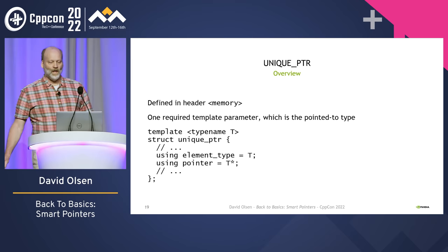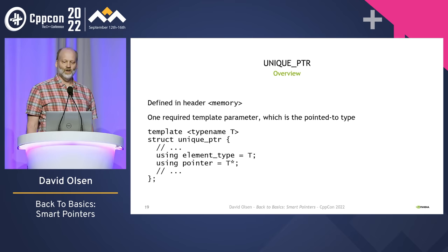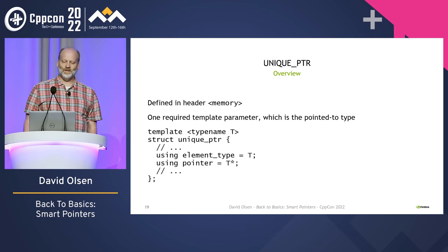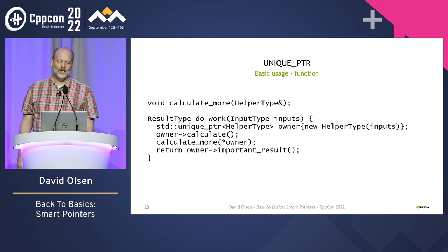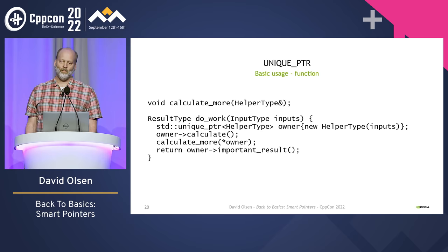unique_ptr, which is defined in the standard header <memory>, has one required template parameter which is the type of the object that it points to. The template parameter is not the type of the pointer but the element type, as you can see from the public type aliases within the class. Here is a simple example of how to use unique_ptr as a local variable.